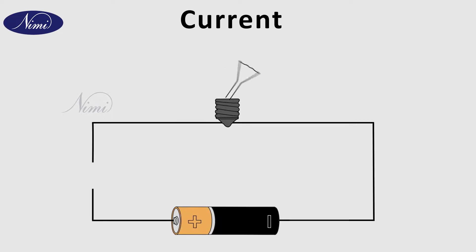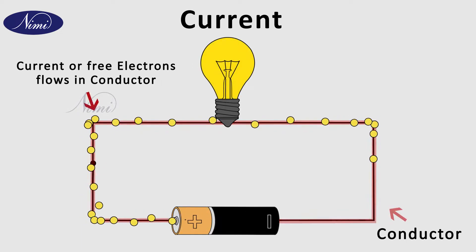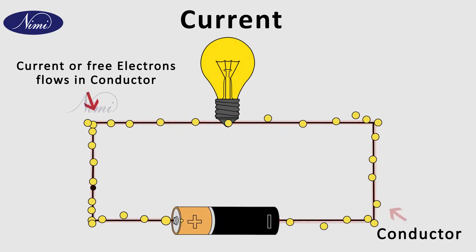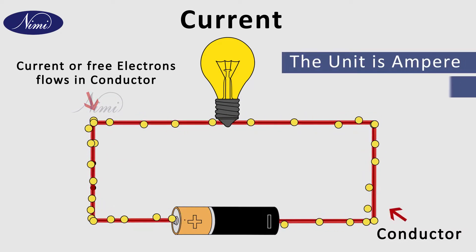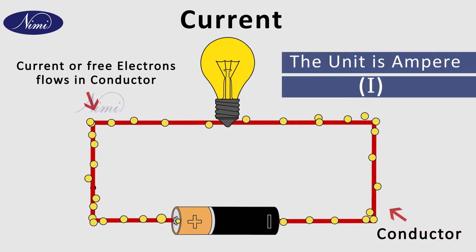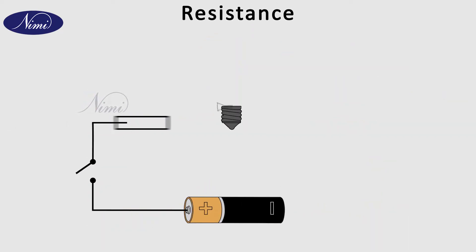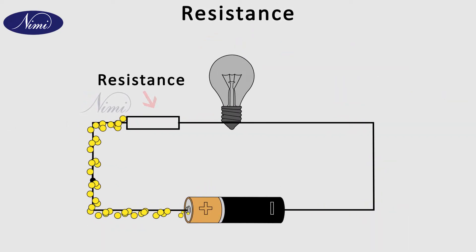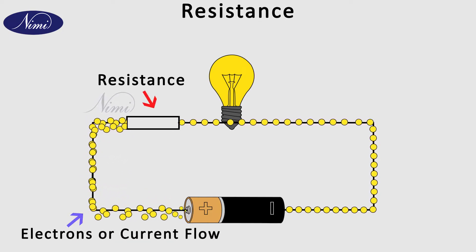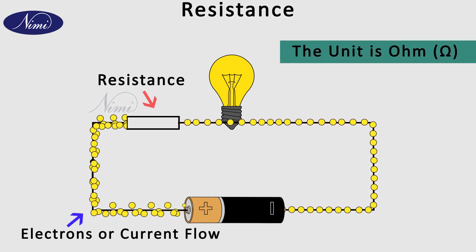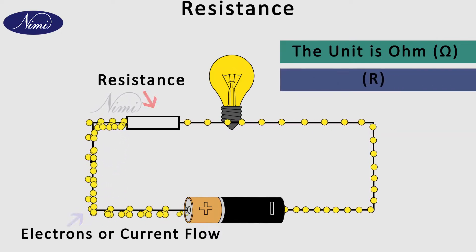Then, what is current? Current is the flow of free electrons in a conductor. The unit of current is ampere, and it is denoted by the letter I. Then, what is resistance? Resistance is a property of a conductor which opposes the flow of electrons or current. The unit of resistance is ohm, and it is denoted by the letter R.